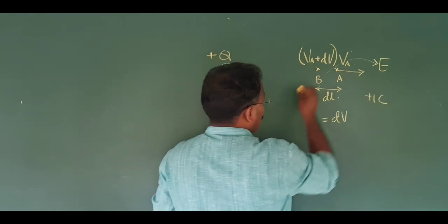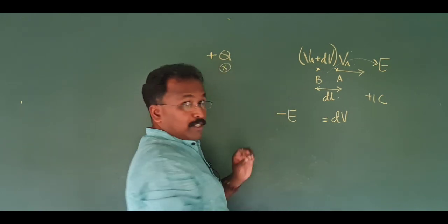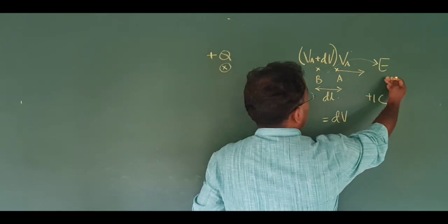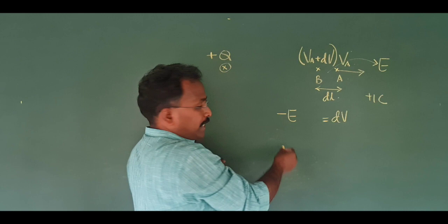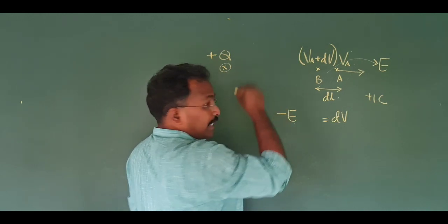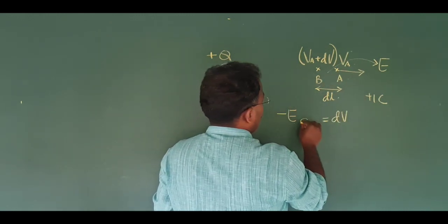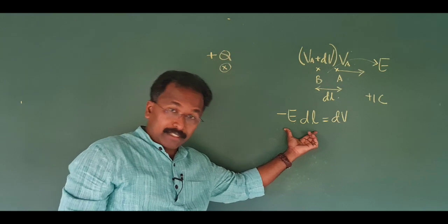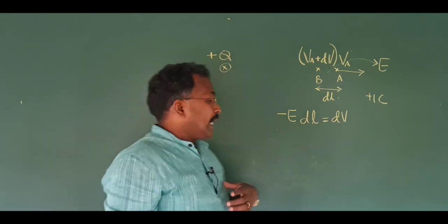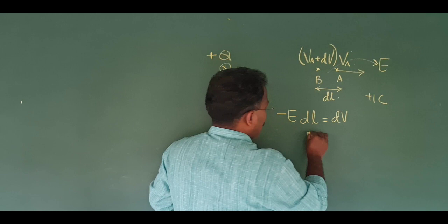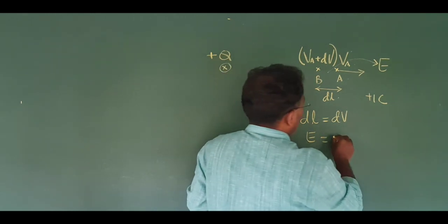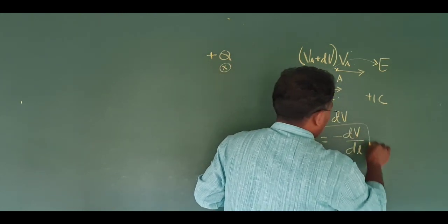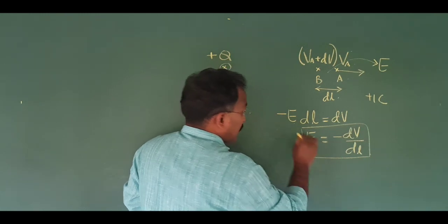So, you can see the force between A and B. Why am I keeping a minus sign over here? The electric field intensity E acts in the opposite direction. So, force in the angle is minus E. You move in the dL distance, you can do E into dL. That is dV. So, the electric field intensity equation: E is equal to minus dV by dL. This is a very important equation.